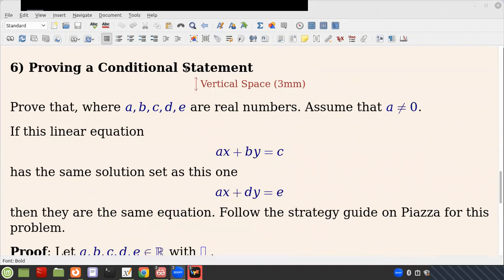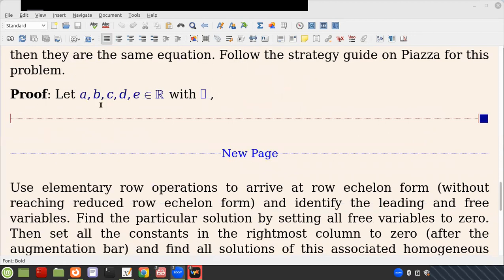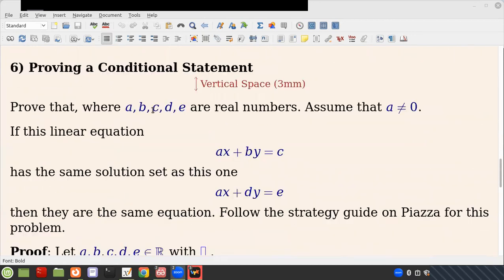Then you have proving a conditional statement. So you're going to go through and write a little essay in here that shows, that proves, you know, it's messing with this stuff. So that's what you want to look at. It says prove that where A, B, C, D, and E are real numbers.